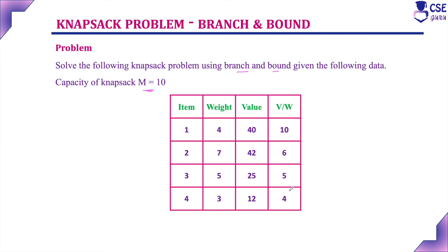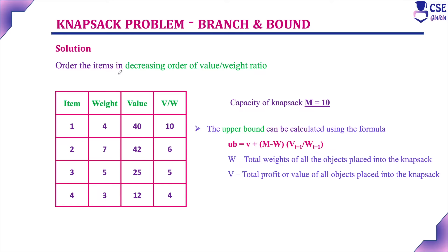So no need to do that step. Suppose if they had given only item, weight, and value, the next step would be to find the value-by-weight ratio and order the elements in decreasing order. Since it is already in decreasing order, we will continue the procedure. In knapsack problem using branch and bound technique, we need to calculate the upper bound value at each step using the formula: UV = V + (M - W) × (V_i+1 / W_i+1).